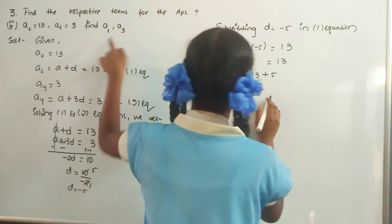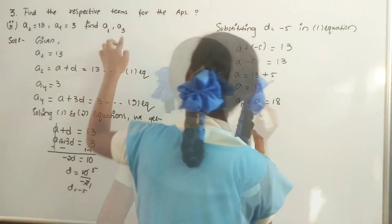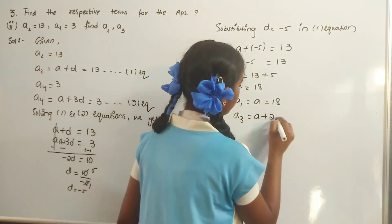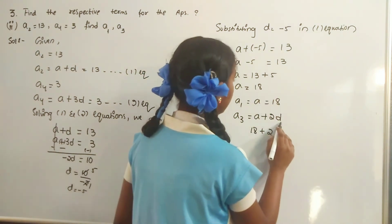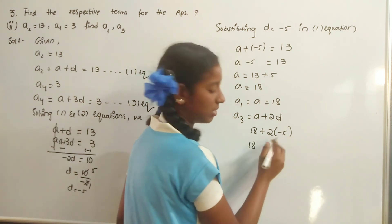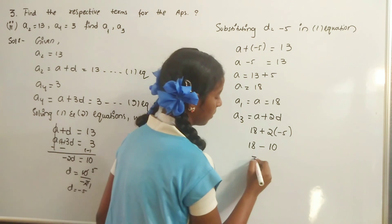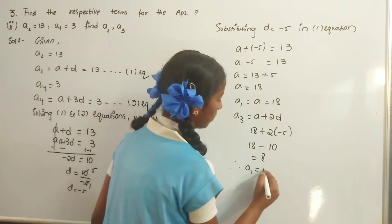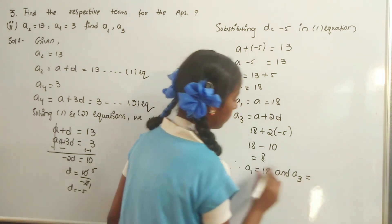Now we have to find A1. A1 is equal to A is equal to 18. Now solving for A3: A3 is equal to A plus 2D. A is 18 plus 2 into minus 5, that is 18 minus 10, is equal to 8. Therefore, A1 is equal to 18 and A3 is equal to 8.